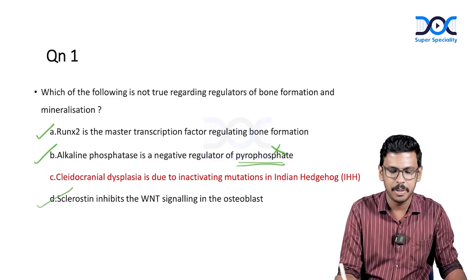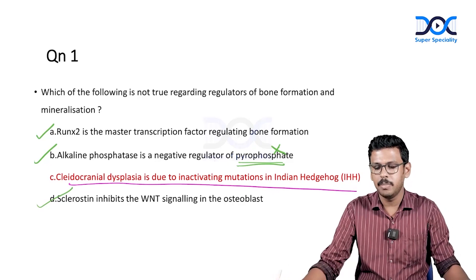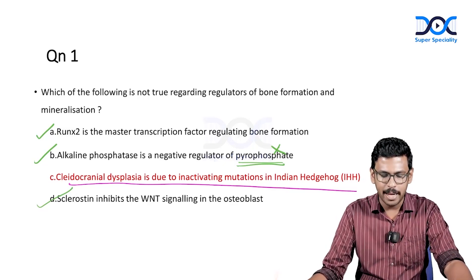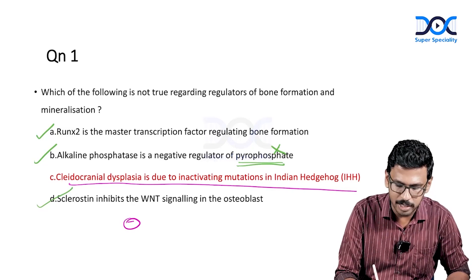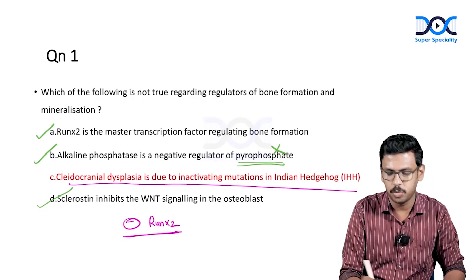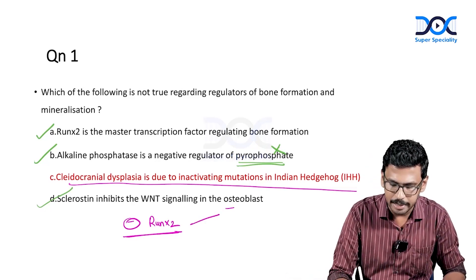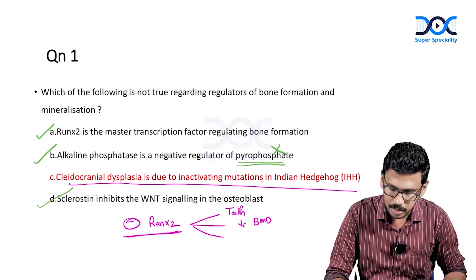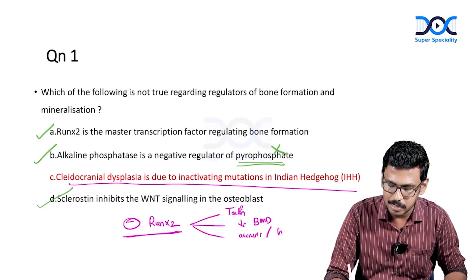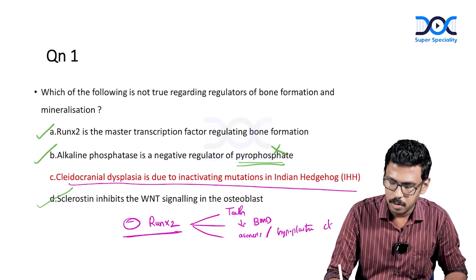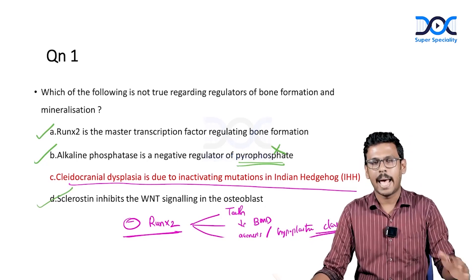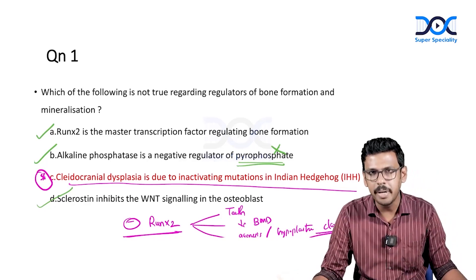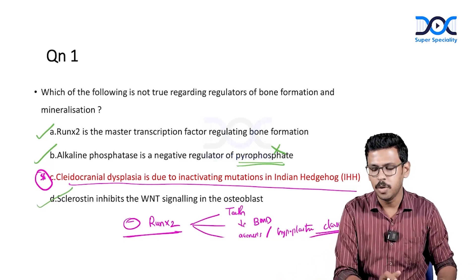The false statement is that cleidocranial dysplasia is due to inactivating mutation of the Indian hedgehog gene. IHH inactivating mutation results in premature or juvenile osteoporosis. Cleidocranial dysplasia is due to inactivating heterozygous mutation in the RUNX2 gene — an autosomal dominant condition causing abnormalities in teeth, reduced bone mineral density, and the classical finding of hypoplastic or absent clavicles.